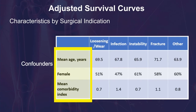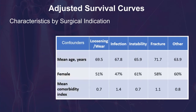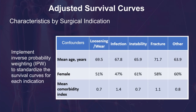These variables are confounders since their distribution differs across the five revision indication groups, and they are also associated with survival. We implement inverse probability weighting to standardize the survival curves for each indication group to the distribution of covariates in the entire study sample, allowing for a direct graphical comparison of survival rates between the indication groups.